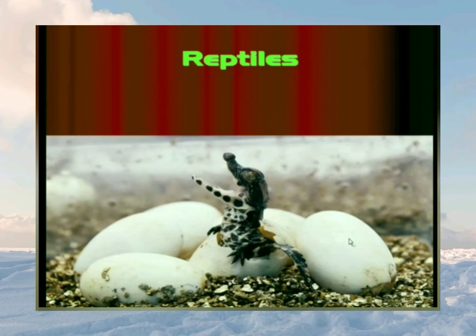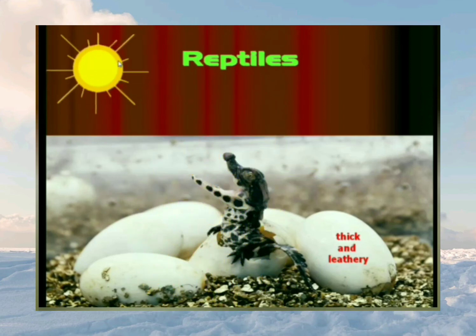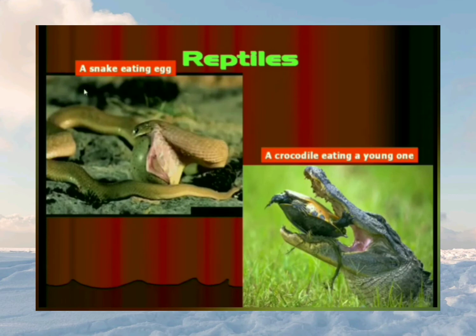Their eggs are protected by shells which are thick and leathery, so the eggs do not break when laid on the ground. The eggs are not incubated by parent reptiles — the parents don't sit on the eggs to give warmth. Instead, the eggs get warmth for their development from the sun. Even after hatching, parent reptiles do not take care of their babies, and because of this, many eggs and young ones are eaten up by other animals.